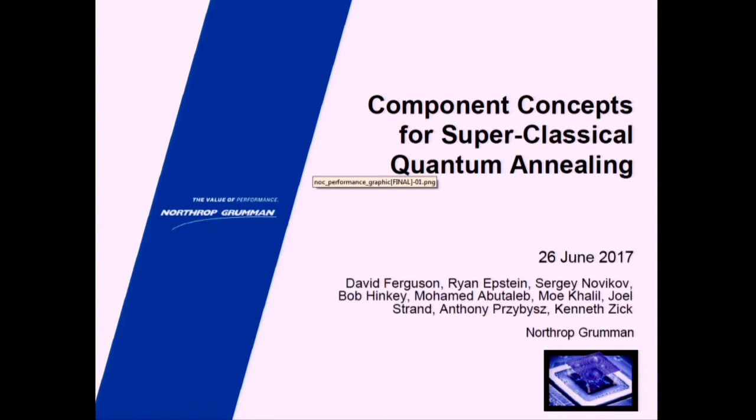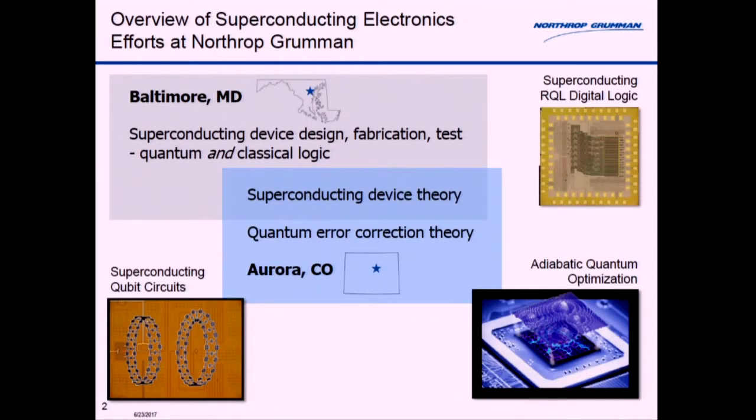Let me tell you a little bit about Northrop Grumman. We have work in superconducting electronics with research efforts in digital superconducting logic, in particular reciprocal quantum RQL digital logic. Here's a chip demonstrating that. We have device design, fabrication and test all at our Baltimore location, as well as superconducting device theory. In Aurora, Colorado we also have device theory as well as quantum error correction and we do work on adiabatic quantum optimization as well as various design work and superconducting qubits.